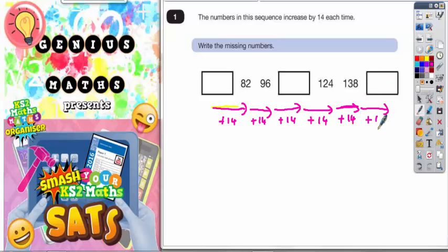So let's do the easy ones first. This box is 96 add 14. Well, 96 add 14, let's do a column method if we can't do it in our head. You may be able to do that in your head. Six add four is 10, put the zero in, carry the one. Nine plus one is 10, plus the one is 11. So this box needs to be 110.